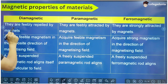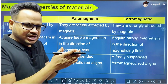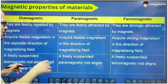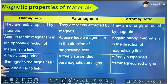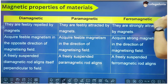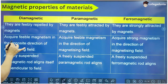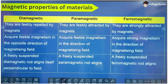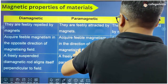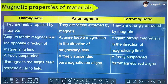Diamagnetic substances are feebly repelled by magnets because the magnetic moment induced in them is opposite to the external magnetic field, so they do not get attracted but get repelled. Paramagnetic substances are weakly attracted by magnets. Ferromagnetic substances, because they have a very strong magnetic field, are strongly attracted by magnets. Diamagnetic substances acquire feeble magnetism opposite to the magnetizing field, paramagnetic substances acquire feeble magnetism in the direction of the magnetizing field, and ferromagnetic substances acquire strong magnetism in the direction of the magnetizing field.